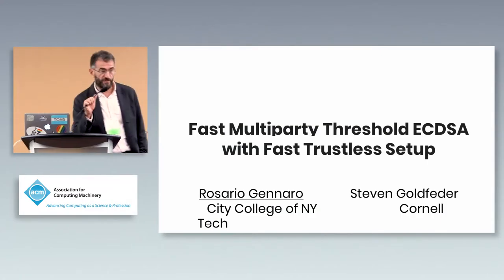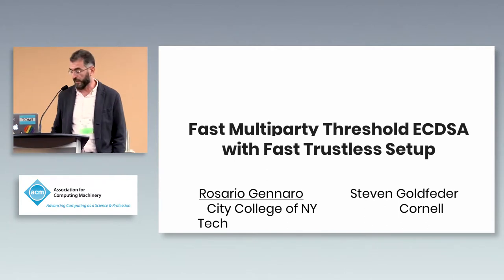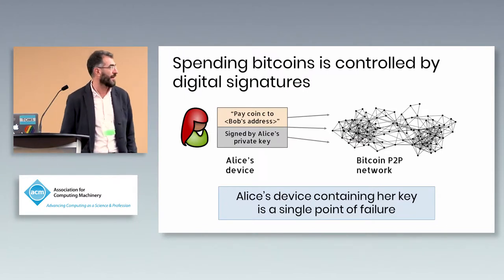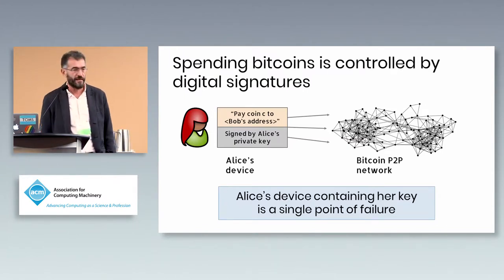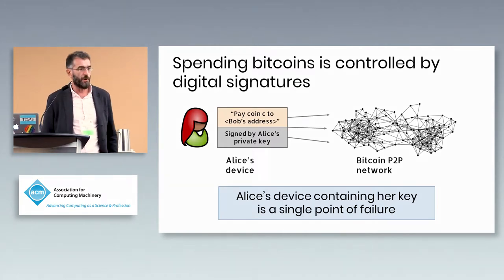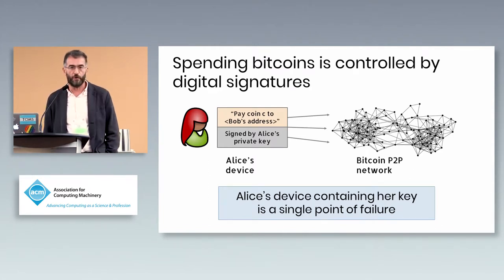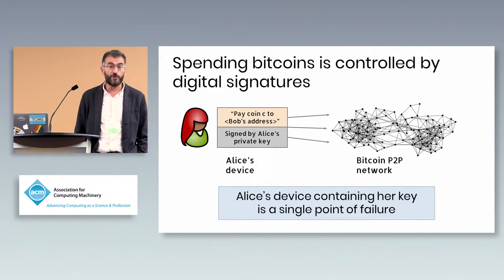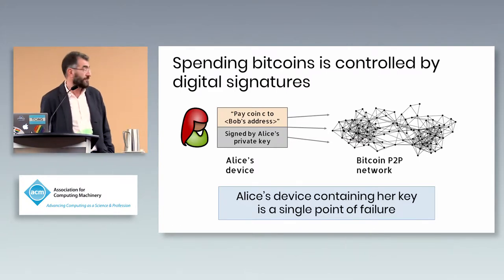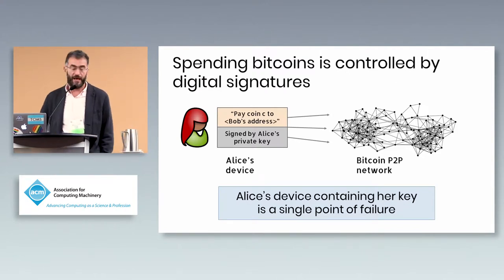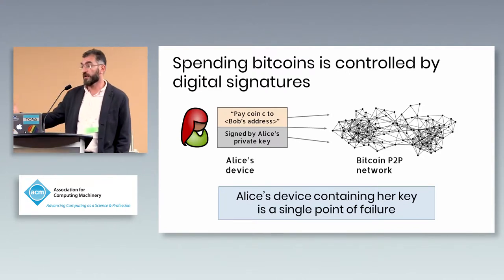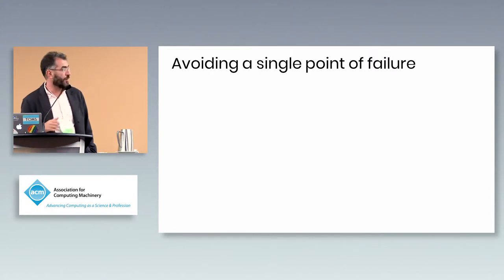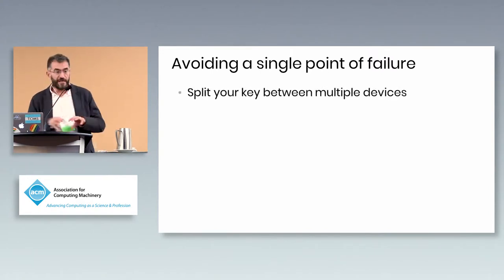This is joint work with Stephen Goldfeather at Cornell Tech. The motivation for this work comes mostly from cryptocurrencies. Spending bitcoins or any cryptocurrency is controlled by a digital signature, and the security of your coins is controlled by the security of the key you use to sign. Therefore, the storage of your secret key is the single point of failure for your system.